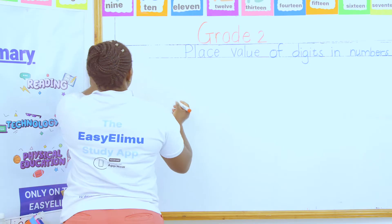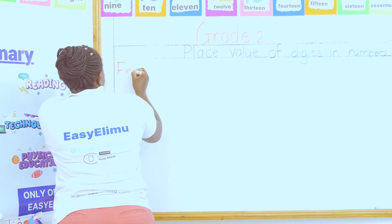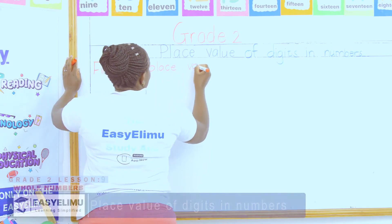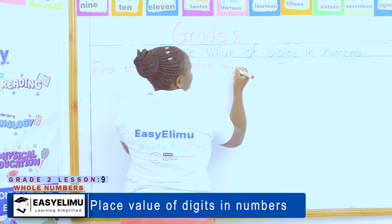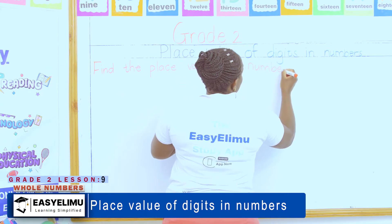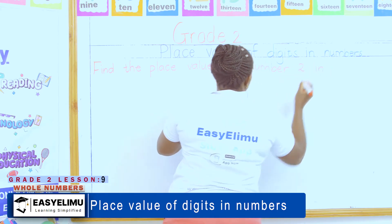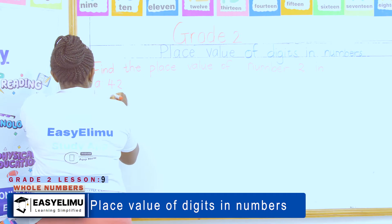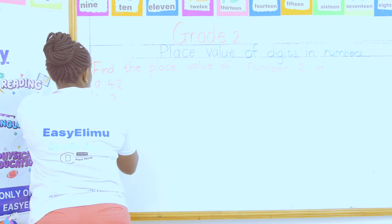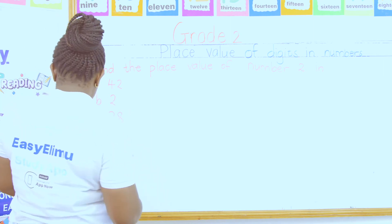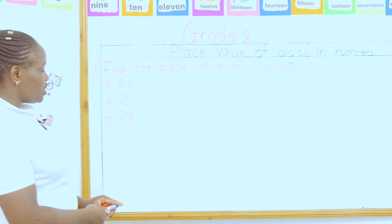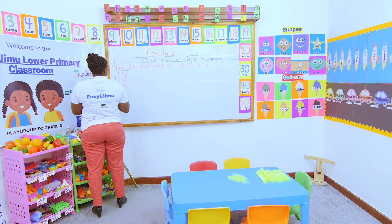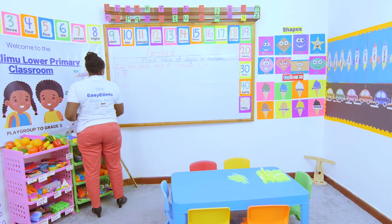They'll say: find the place value of number two — then they list a group of numbers. They will say: find the place value of number two in 42, in two, in 28. So what am I supposed to do? You remember the place value chart? First of all, indicate the place value chart on your numbers. Let me write these numbers here.